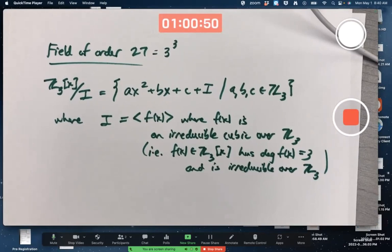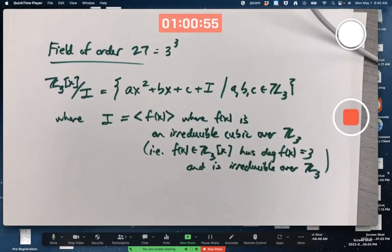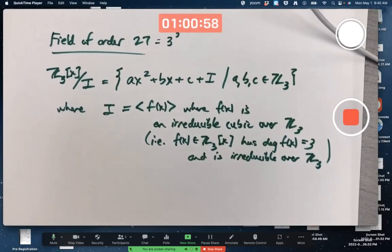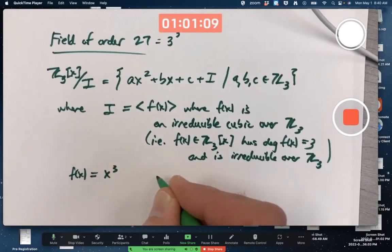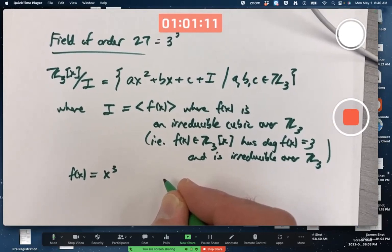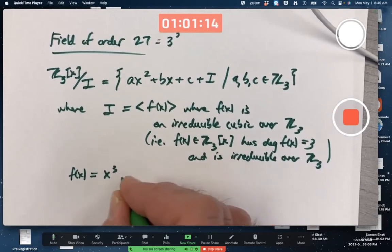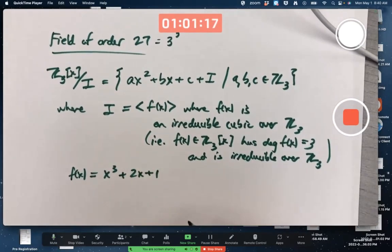So once again, it's trial and error. Find a cubic. That could take a long time, a little longer than the other one. Can I think of one really quick? X cubed plus X plus 1 doesn't work because 1 would be a root. Maybe 2X plus 1? I'm not positive. 0 is not a root. 1 is not a root. Is 2 a root? 2 cubed is 8 plus 4 is 12 plus 1 is 13. Mod 3 is not 0. Okay. This looks like it would work.